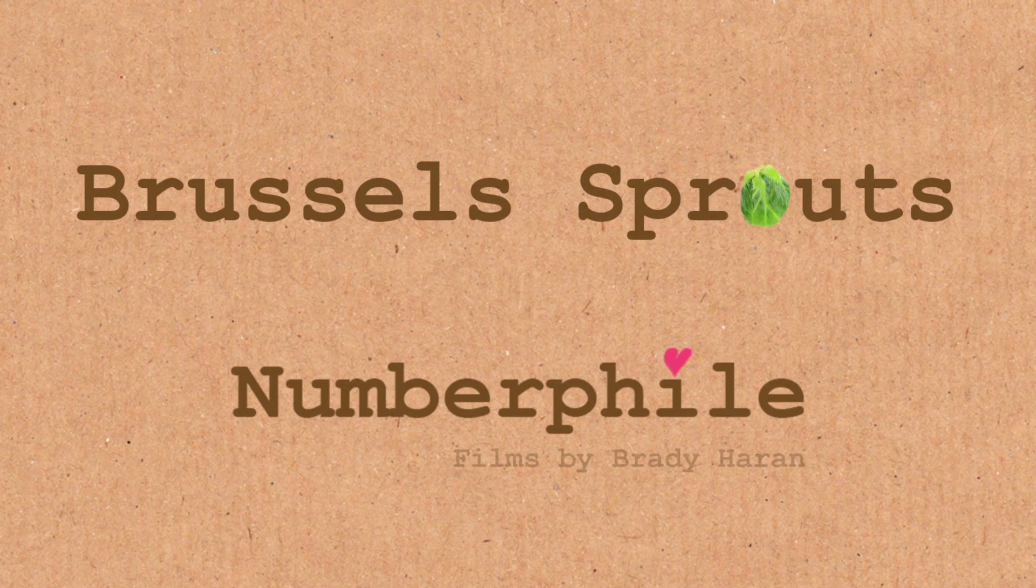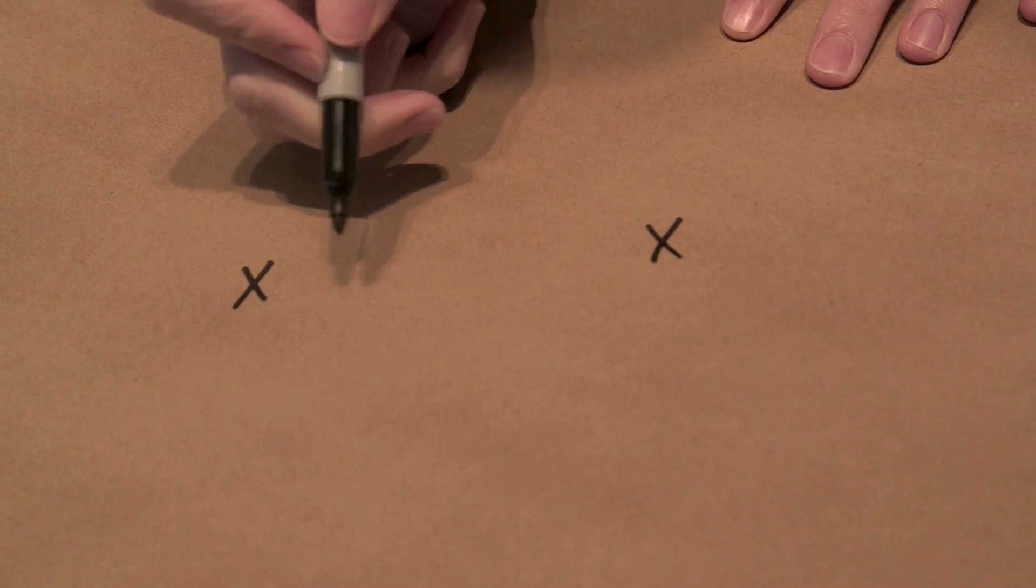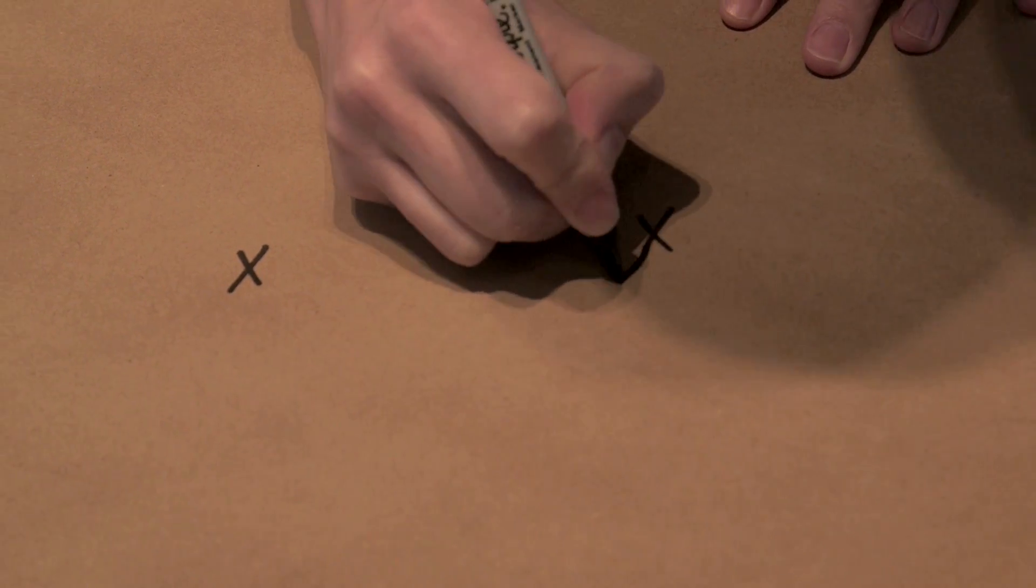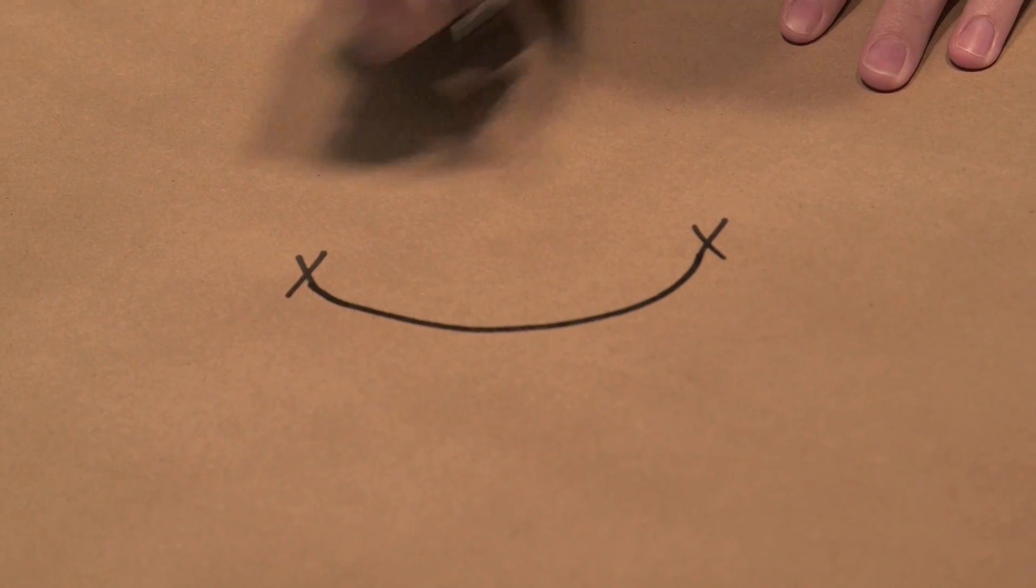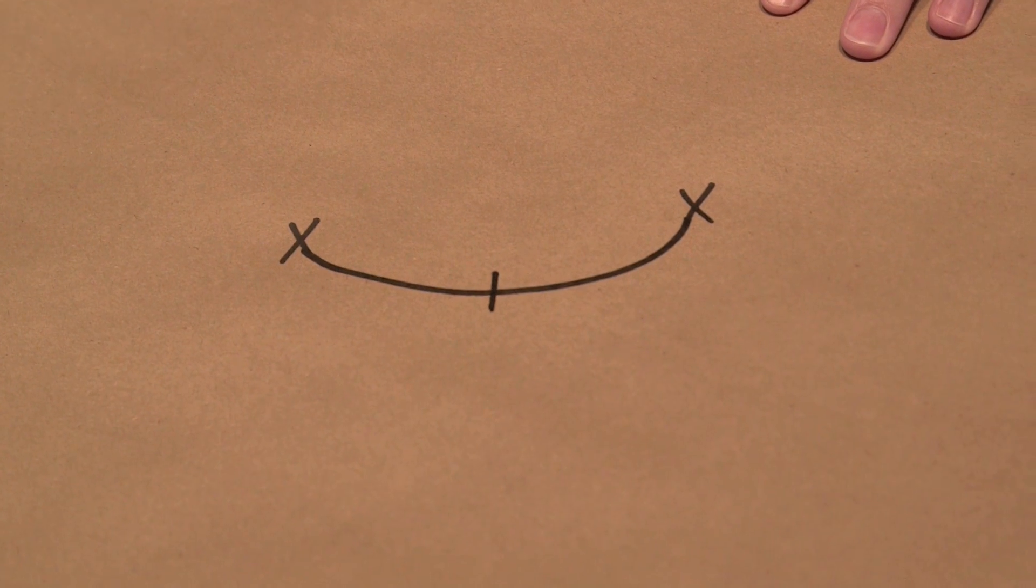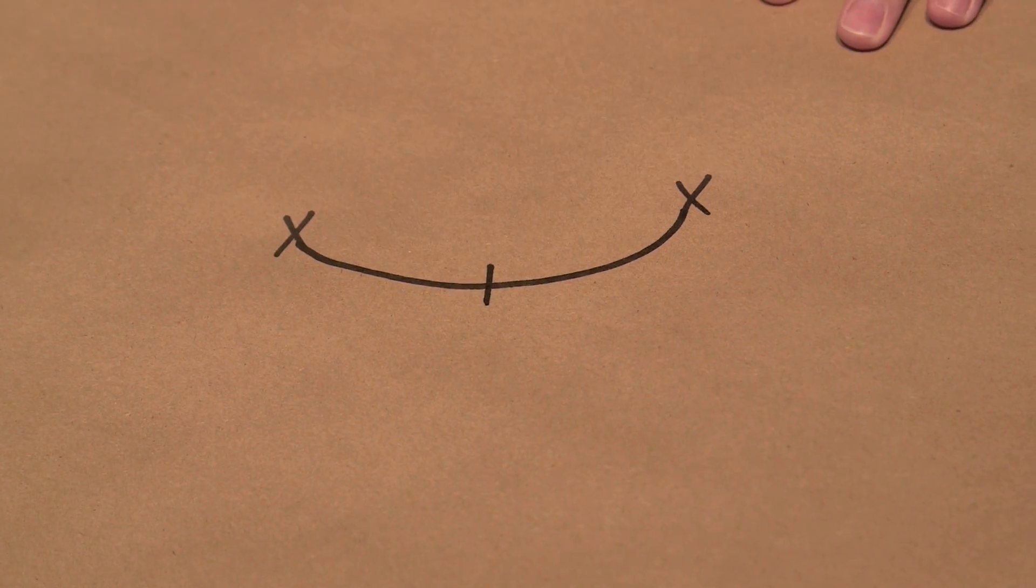We're gonna play a game called Brussels sprouts, so let me show you how to play. We're gonna start with a couple crosses and here's what we do. So on player one's turn they can connect any two of these free ends. So player one might go like that and then you need to put a slash through the curve you've just drawn to create two new ends like this.